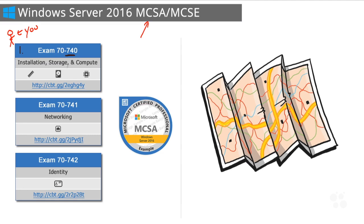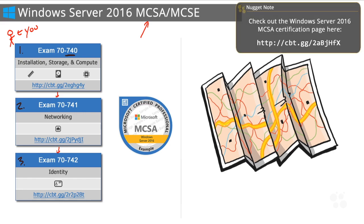This exam covers installation, storage, and compute, providing a good foundation of all the core features in Windows. Once you've conquered 740, the next step is 741, the networking exam, already available at CBT Nuggets delivered by Keith Barker. After 741, you move on to 742, which is identity — focused entirely on Active Directory — covered by Anthony Sequera. Once you've passed all three exams, you'll officially be a Microsoft Certified Solutions Associate on Windows Server 2016.